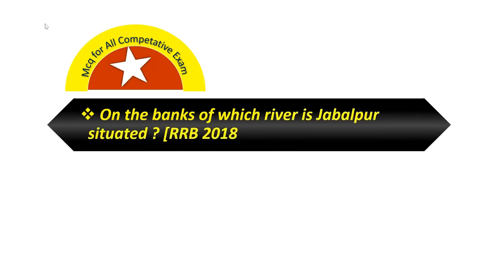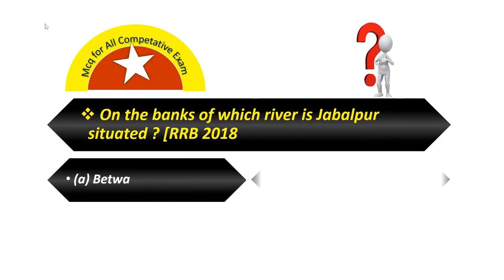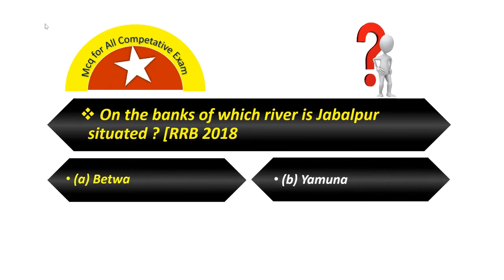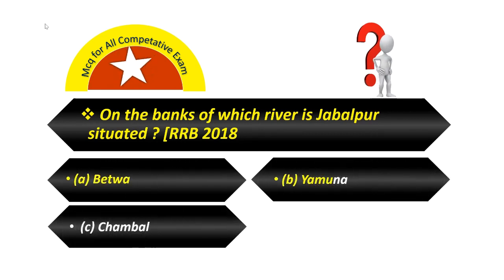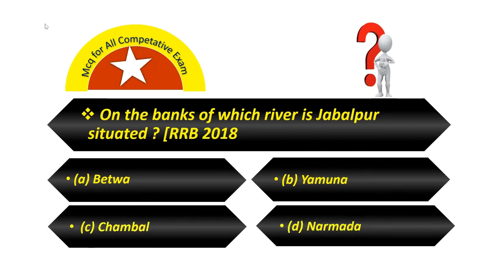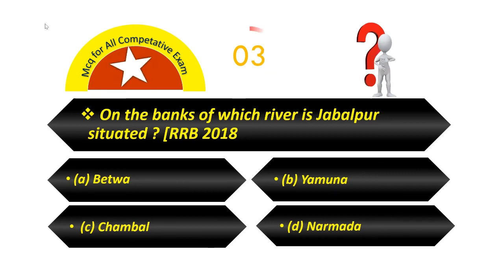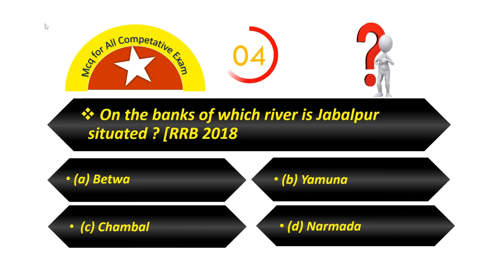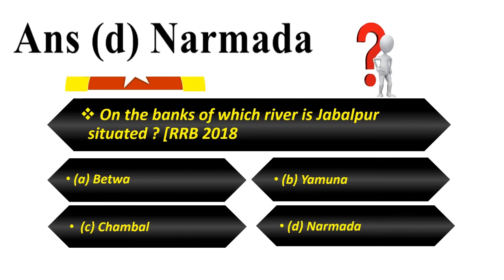On the banks of which river is Jabalpur situated? Option A — Betwa. Option B — Yamuna. Option C — Chambal. Option D — Narmada. Your answer is Narmada.